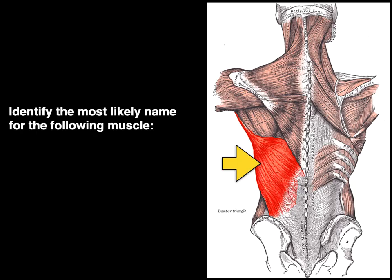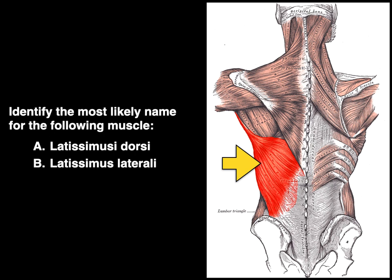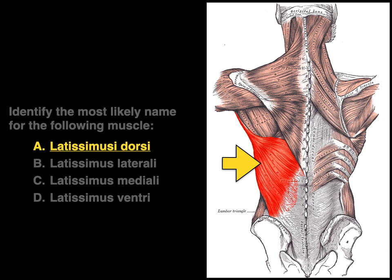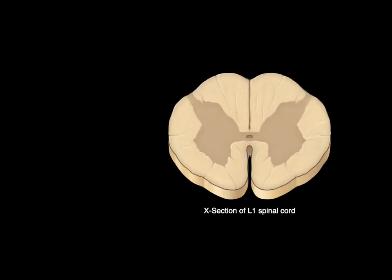Identify the most likely name for the following muscle. Is it the latissimus dorsi, latissimus laterali, latissimus mediali, or latissimus ventri? The answer: latissimus dorsi. The term dorsi means dorsal, or on the back. Latissimus is a really broad muscle.